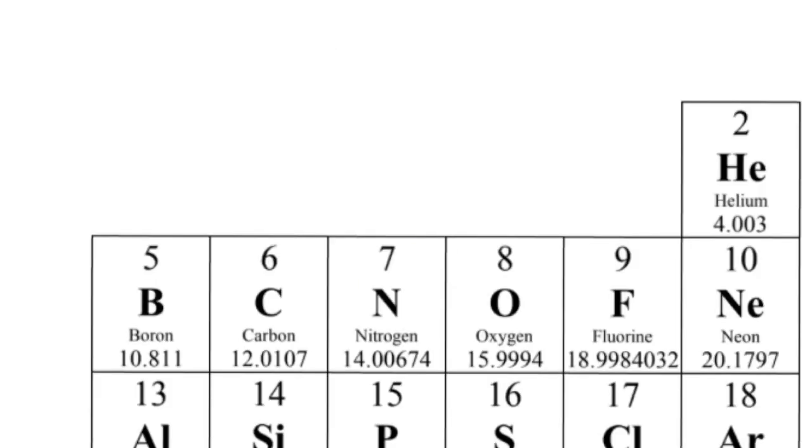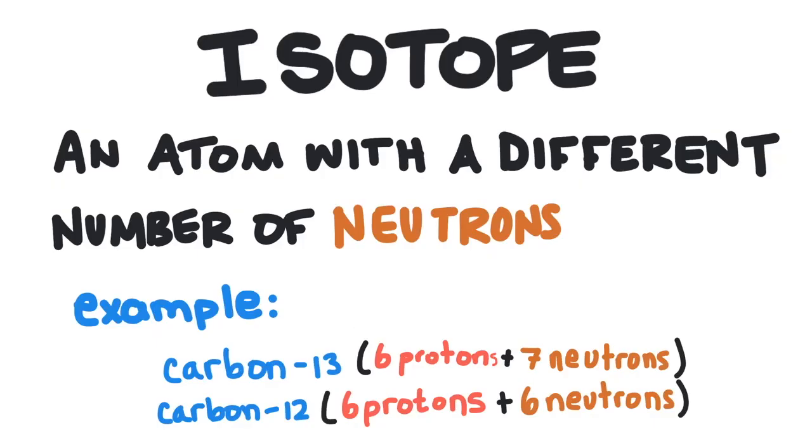If you added another proton to carbon, it would have seven instead of six. It wouldn't be carbon. It would be nitrogen, because nitrogen has seven protons. So isotopes are elements that have different number of neutrons, and as a result, they have a different mass.